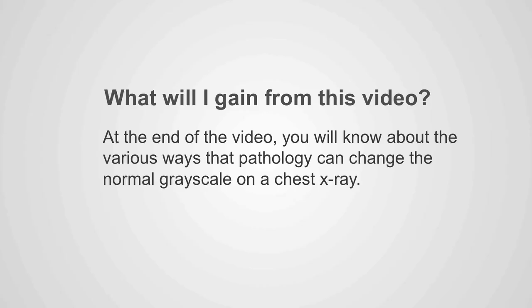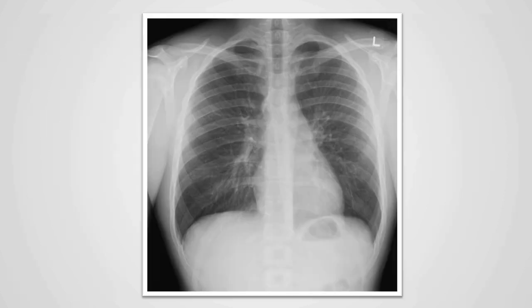At the end of the video, you will know about the various ways that pathology can change the normal gray scale on a chest x-ray. Previously we have learned that a normal chest x-ray has a certain gray scale pattern based on tissue density, geometry, interfaces, and overlap.